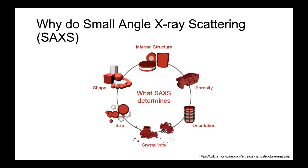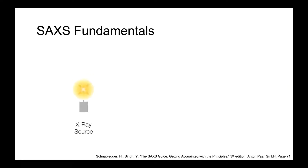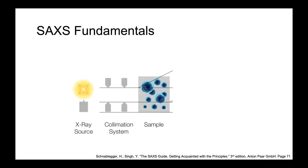Let's talk about the experimental setup. It all starts with an x-ray source — usually copper because of its shorter wavelength, but molybdenum sources have also been used. Here at the MRL we use a copper source. Once those x-rays are generated, you want to get rid of divergent beams by collimating them, which makes the beam more uniform and the experiment more accurate. Those x-rays then exit the collimator and irradiate your sample, where elastic scattering occurs.